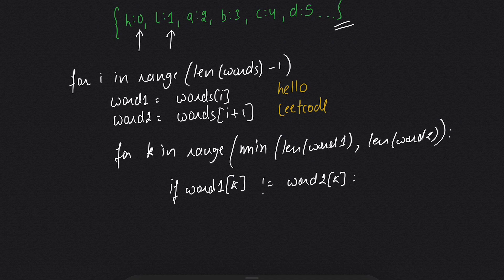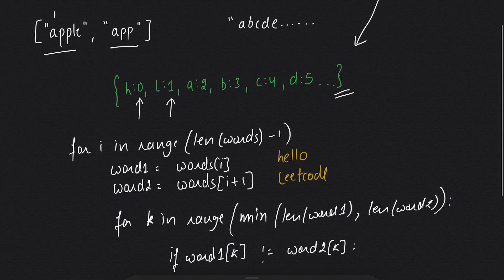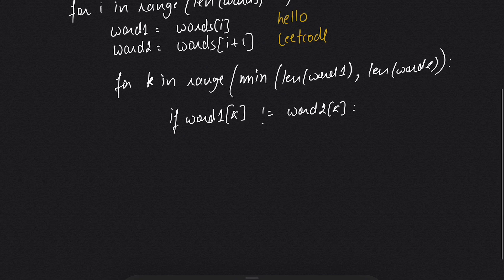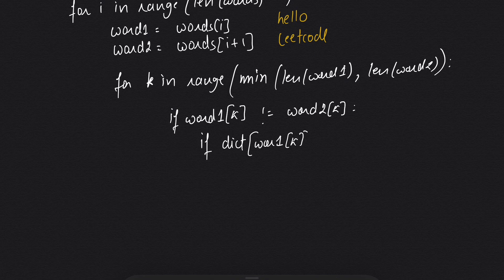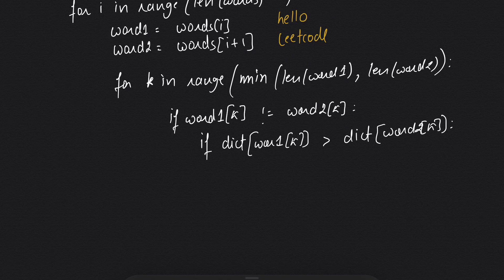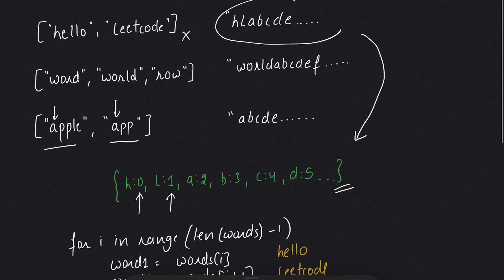If word1[k] is not equal to word2[k], we then check: if dict[word1[k]] is greater than dict[word2[k]], we return false. This handles the case where a character in word1 appears later in the order than the corresponding character in word2.